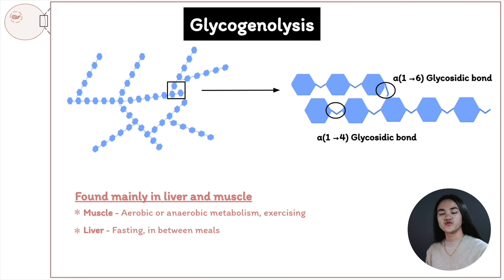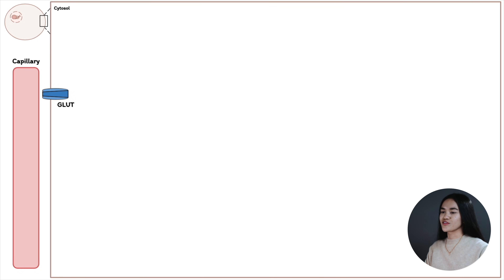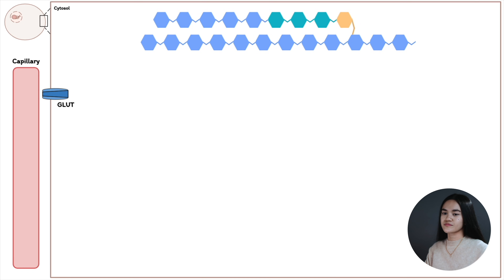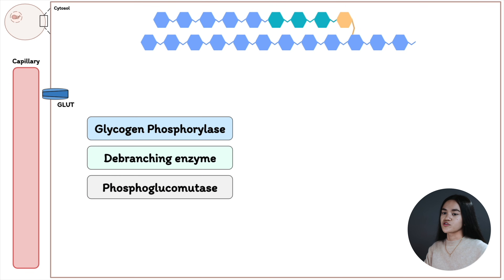The branches are linked via alpha 1-6 linkages. The numbers 1-4 and 1-6 refer to the carbon numbers of the two units that are joined together. Now that we've covered what glycogen is and how it's structured, let's go over how glycogen is broken down. There are three enzymes involved: glycogen phosphorylase, the debranching enzyme, and phosphoglucomutase.